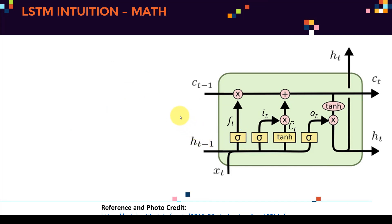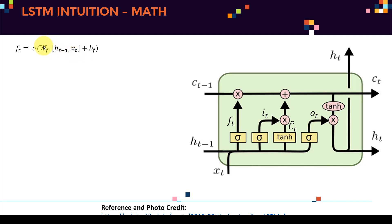Now let's look at the mathematics. The variable ft (forget gate) comes from: concatenating input xt and hidden state ht-1, multiplying by weights Wf, adding bias bf, then applying a sigmoid activation function. This generates the first control signal. This is simply a basic neural network layer with sigmoid activation.